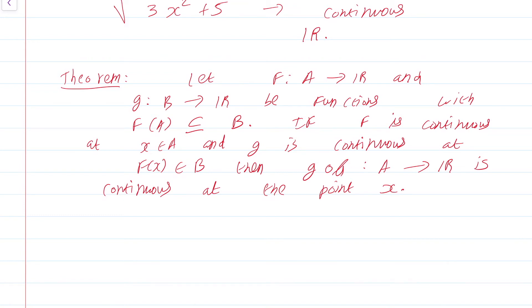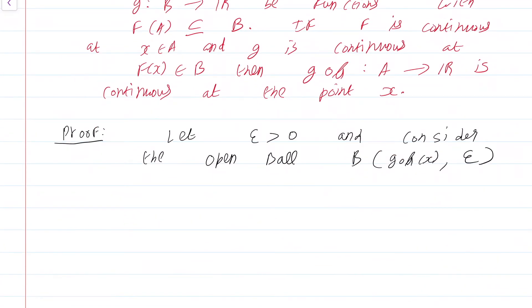Proof: This proof is best done using open balls around the point that we are interested in. Let epsilon greater than 0 and consider the open ball B(g∘f(x), ε).